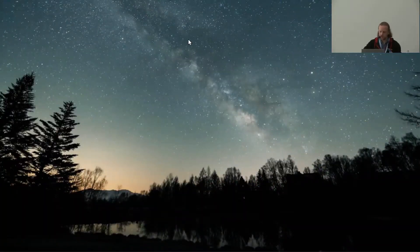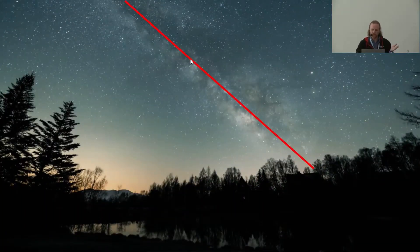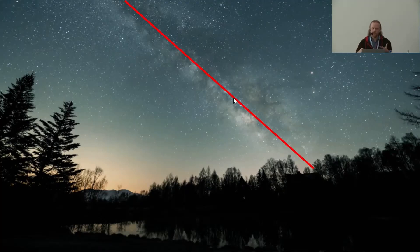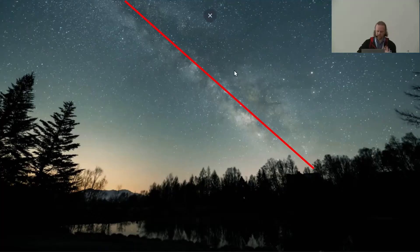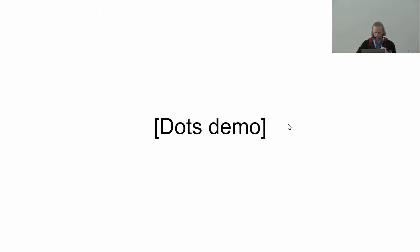Another example of a line like this is the Milky Way in this rather beautiful picture. The Milky Way is in some sense extremely far away. We're talking about a line that's so far away that when you look at it and move yourself around, it doesn't appear to change its position from your point of view.